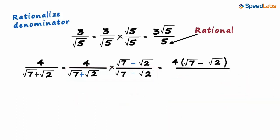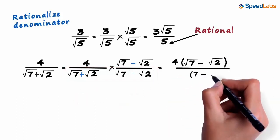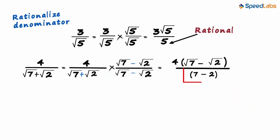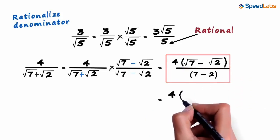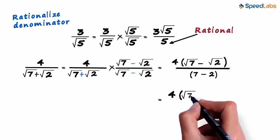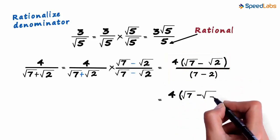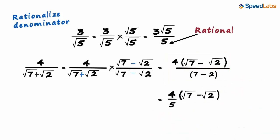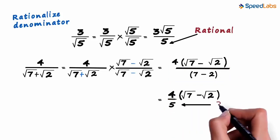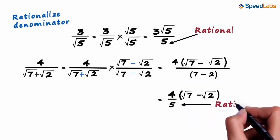That equals 7 minus 2, which is 5. We get our expression as 4 multiplied by (√7 minus √2) divided by 5. That's it — we got what we wanted. The denominator is rational now.